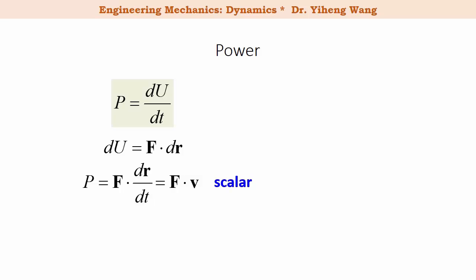Since the unit of work in the SI unit system is joule, therefore the unit for power in the SI unit system is joule per second or watt.